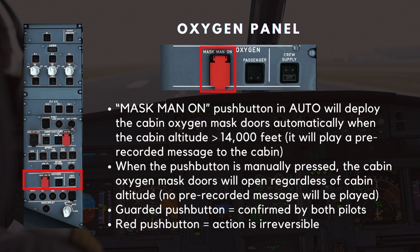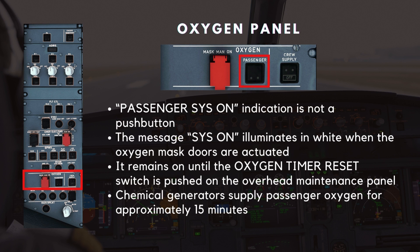When manually pressed, no pre-recorded message will be played. In an emergency decompression scenario, the ECAM QRH will still call for the push button to be pressed even if the masks have automatically deployed. As with any guarded push button, the action of switching this on must be confirmed between the two pilots. And for the case of a red push button, this action is irreversible. The passenger system on indication is not a push button — the message system on illuminates in white when the oxygen mask doors are actuated.